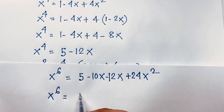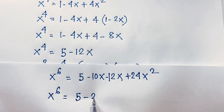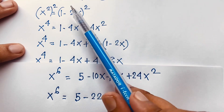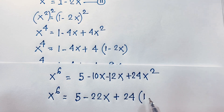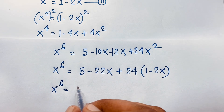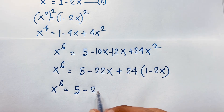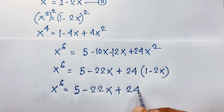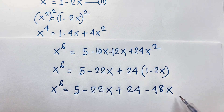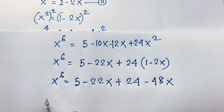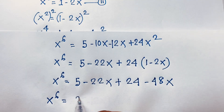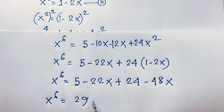So x^6 equals 5 minus 10x plus 12x — wait: combining gives 5, then minus 10x plus 12x equals 22x, plus 24x². Recalling x² equals 1 minus 2x and substituting: x^6 equals 5 plus 24 times (1 minus 2x) minus 22x, giving 5 plus 24 minus 48x minus 22x, so x^6 equals 29 minus 70x.